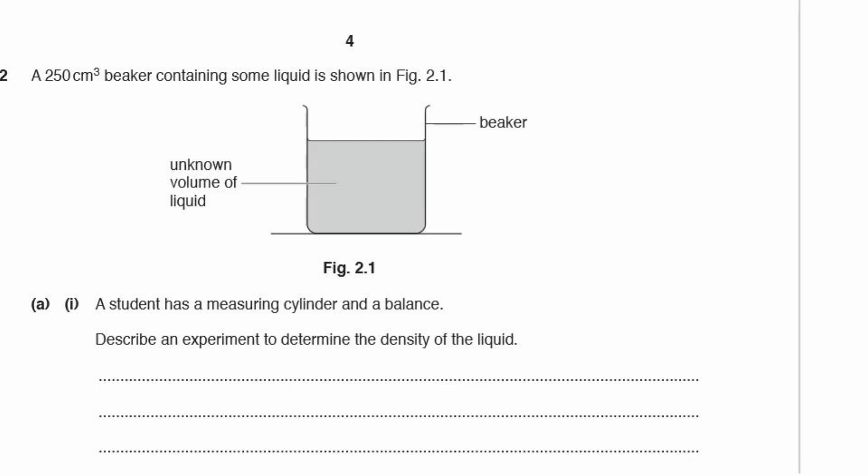Question 2: a 250 centimetre cubed beaker containing some liquid is shown in figure 2.1. We have an unknown volume of an unknown liquid and a beaker. A student has a measuring cylinder and a balance. Describe an experiment to determine the density of the liquid.